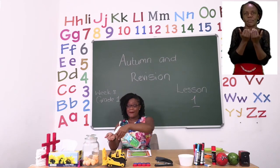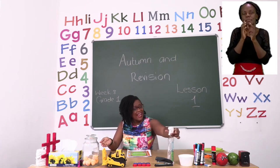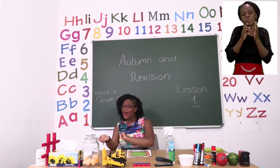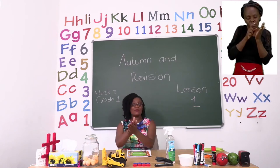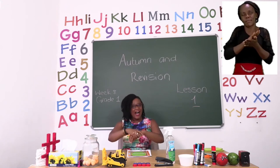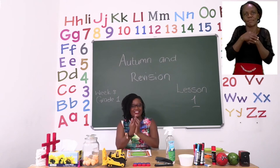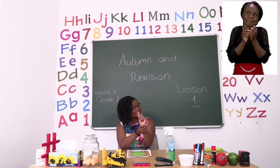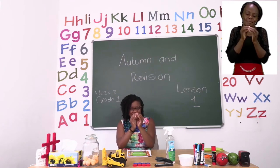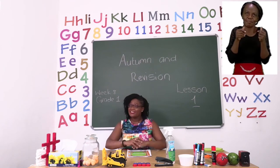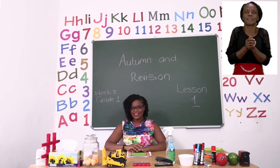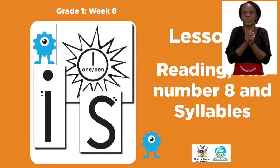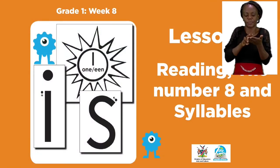Remember, how do we sanitize? We take a little bit of sanitizer, put it in our hand and we rub inside, around, in between our fingers, on our wrists and on our fingertips. Make sure your hands are dry before you touch anything else. Well done! For today's lesson we will be talking about reading, the number eight, and syllables.